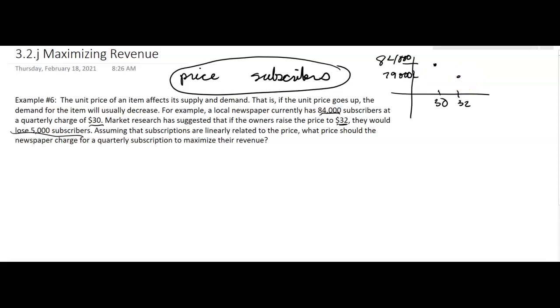And that would be another point. Think about that for just a minute. That's what that information was saying. Assuming that subscriptions are linearly related to the price, here we have price, here we have subscriptions, and they're saying this is a linear relationship.